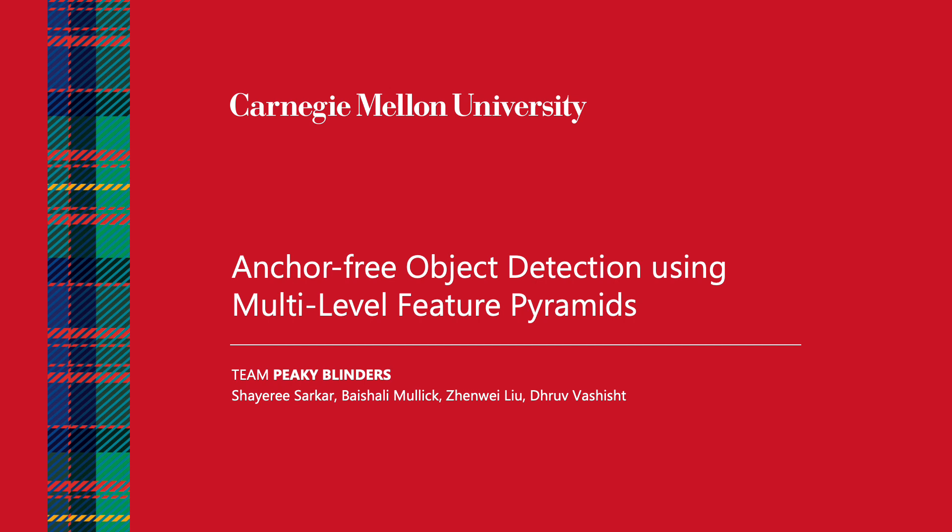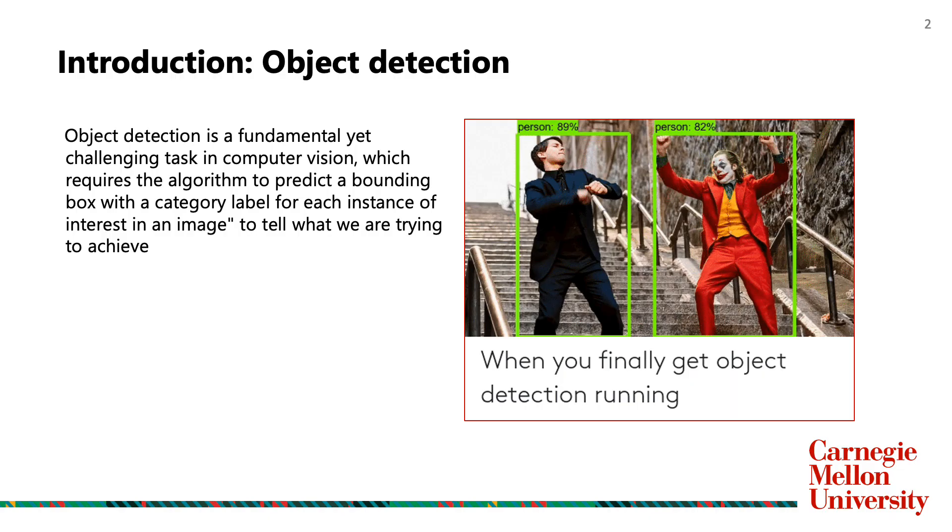Hi everyone, we are Team Peaky Blinders and I'm Shiree. This is our project on anchor-free object detection using multi-level feature pyramid networks. Object detection is a fundamental yet challenging task in computer vision which requires the algorithm to predict bounding boxes with a category label for each instance of interest in the image.